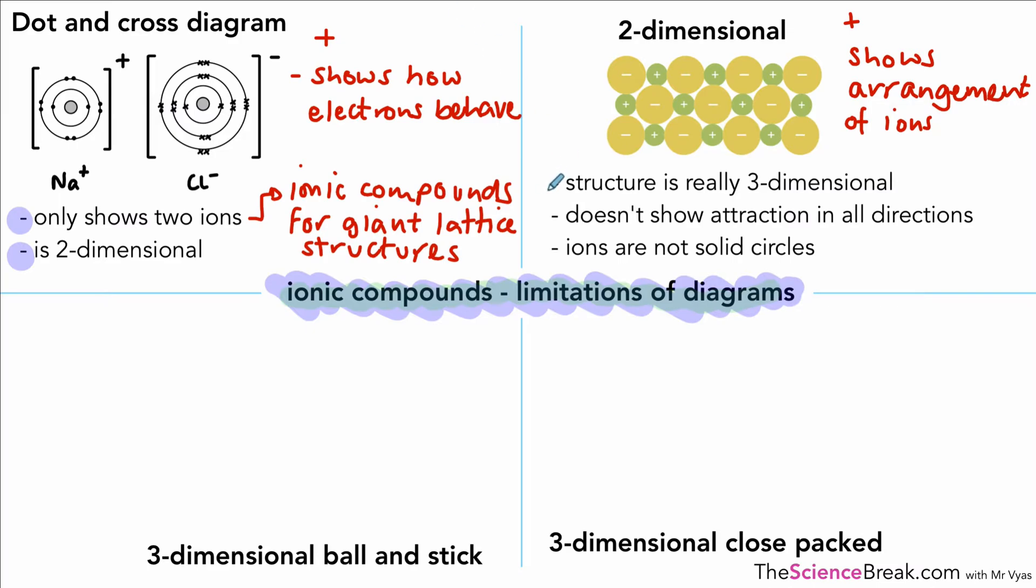In this case it's sodium chloride, so it shows the arrangement of the ions, that they alternate in rows and columns. But it doesn't actually show the structure is really three-dimensional, and it doesn't show the attraction in all directions. Also, the ions are not solid circles; they are made of a nucleus and electrons in their different shells. This diagram shows them as solid circles, and sometimes they're drawn as solid spheres.